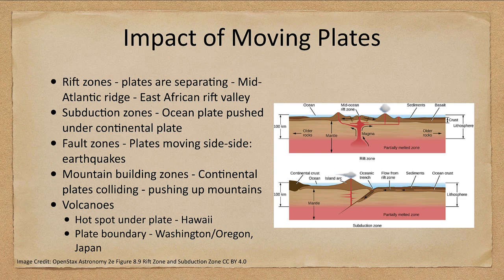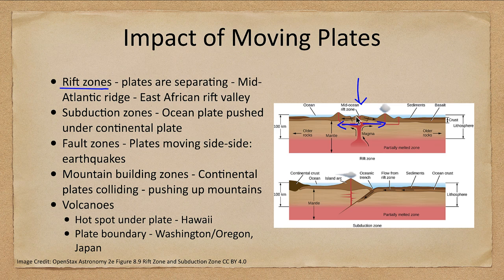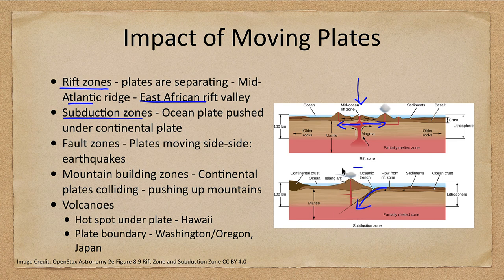What are the impacts? We get things called rift zones — an example would be the mid-Atlantic area, where magma coming up is spreading the two plates apart and new crust is being formed. This also occurs in the East African Rift Valley. There are also subduction zones, where one crust is pushed down below another; as it melts, that forms volcanic activity where one plate is going under the other.